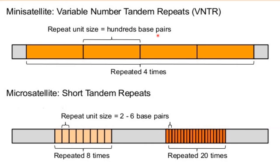For minisatellites, the repeat unit size can be 10 to 100 base pairs, whereas for microsatellites it is within two to six base pairs. In this example, the microsatellite repeat unit is repeated eight times, while in the minisatellite the same repeat unit is repeated 20 times. This is the key difference between minisatellites and microsatellites.